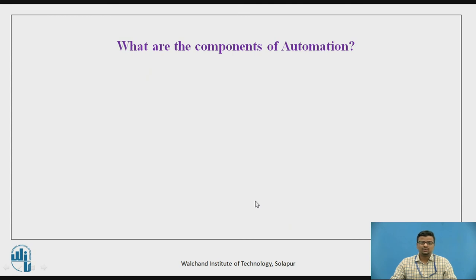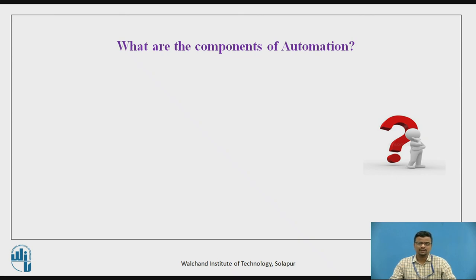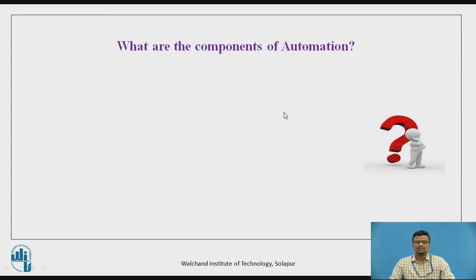There is a question: what are the components of automation? The components of automation include flexible manufacturing systems, computer-integrated manufacturing (CIM), CNC machine tools, automatic storage and retrieval systems, and automatic guided vehicles. These are some of the components of automation.